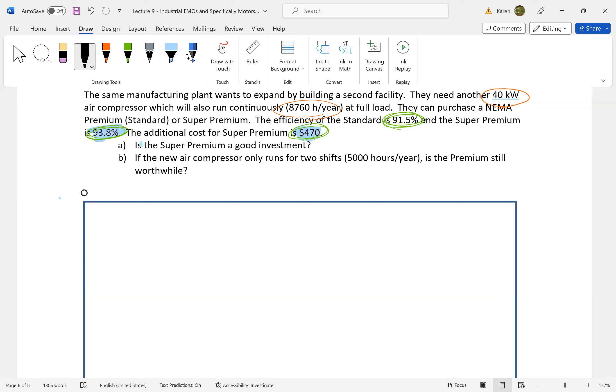Part A asks: is the super premium a good investment when we're looking at motors? For the original demand, looking at the 91.5% efficiency, we can compare the original demand and the new demand to look at the amount of demand that will be saved. The original demand is 40 kilowatts running at 91.5% efficiency, so we derate this down to 43.72 kilowatts—the actual power that will be used by this motor because of its lower efficiency.